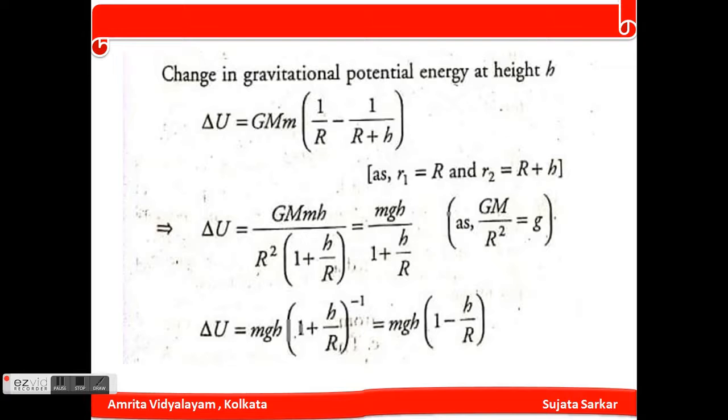So we can put the value and we will get delta U equals GMmh divided by R squared times 1 minus h by R.